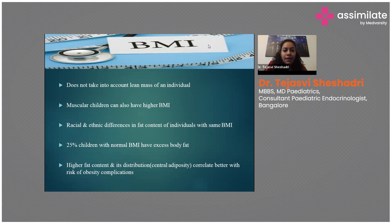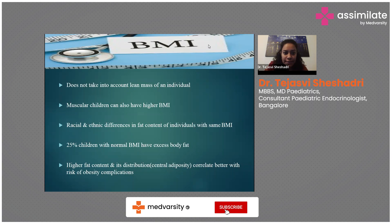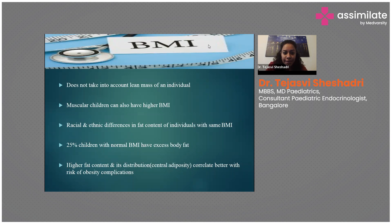We mainly take BMI as the cutoff to diagnose obesity or overweight, but it does have limitations. It does not account for lean mass — muscular children can also have a higher BMI. There are racial and ethnic differences, and even children with a normal BMI can have up to 25 percent excess body fat. Recent guidelines state that central adiposity and higher fat content correlate better with obesity risk than BMI alone.